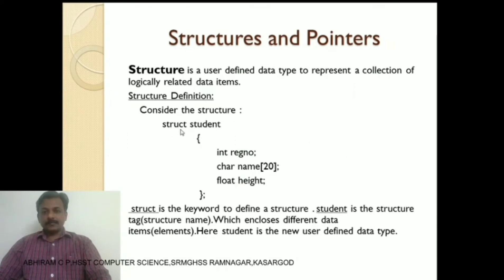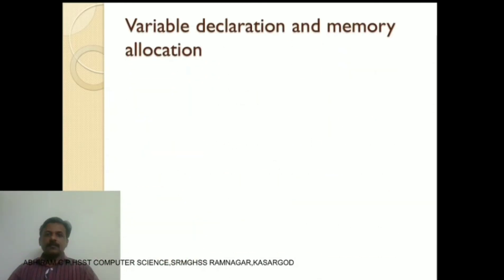Student is the new user-defined data type. For variable declaration and memory allocation, see the syntax: structure_name variable_name; Also we can write: struct structure_name variable_name; For example, student s — here s is the structure variable of type student. With student s1, s2 — s1 and s2 are structure variables of type student. We can create any number of structure variables like this.